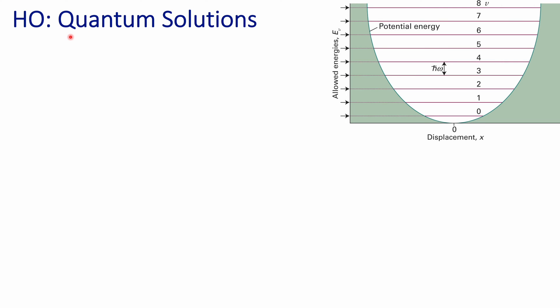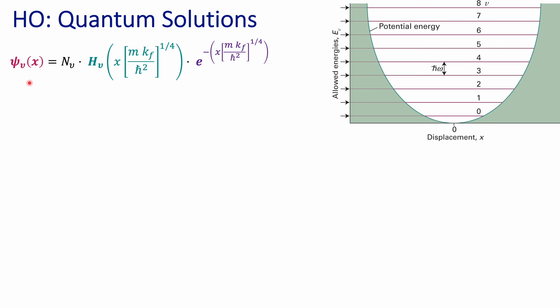We're going to be talking about the quantum harmonic oscillator and discuss some of the properties of those solutions. We know that the wave function is of this form, where we have three components: one is the normalization constant, another is a series of special functions that we call Hermite polynomials, and the third one is a Gaussian function.